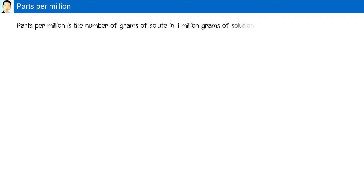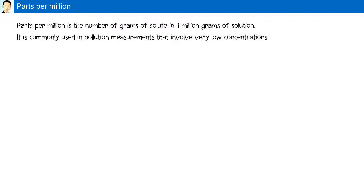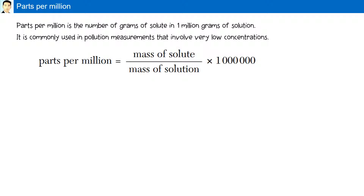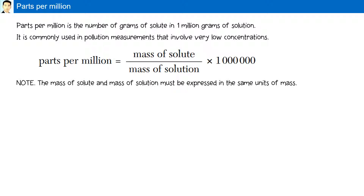Parts per million. Parts per million is the number of grams of solute in one million grams of solution. We commonly use this in pollution measurements that involve very low concentrations, for example, the concentration of lead in water. From reference table T, parts per million equals the mass of solute divided by the mass of solution, multiplied by one million. Note: the mass of solute and mass of solution must be expressed in the same units of mass.